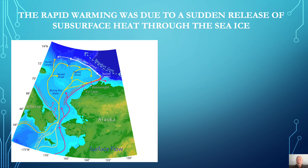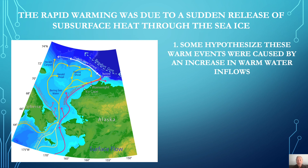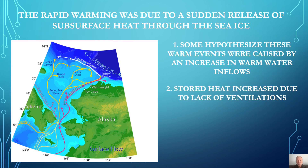Now, there are several hypotheses, all of which may be in play, explaining why sea ice suddenly releases ocean heat to produce those warm Dansgaard-Oeschger events. Some hypothesize that these warm events were caused by an increase in warm water inflows. Others suggest that because thicker ice was preventing heat from ventilating, as air temperatures cooled, subsurface temperatures increased to the point it melted the ice.